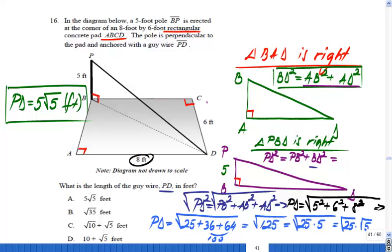PD, which is the guy wire we're looking for, has a length of 5 square root 5 feet. I don't have to find an approximation because this is the best value, the perfect value. The approximation would be around 11, but this is the answer. You're going to choose A for this problem.